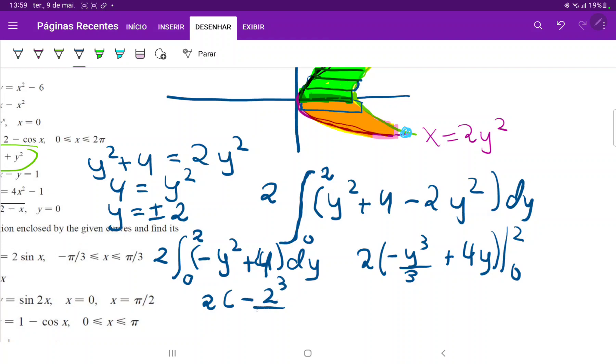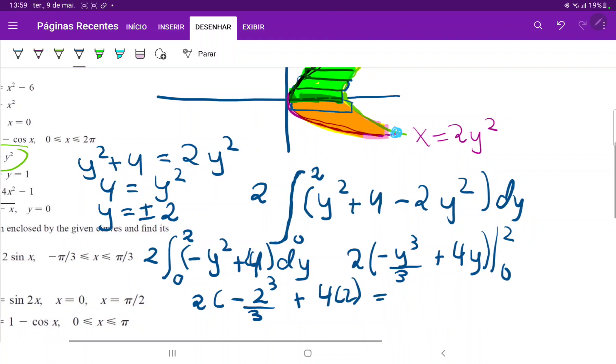So this is two times minus two cubed over three plus four times two. So this is equal to two times minus two cubed over three, that is minus eight times two, so minus 16 over three plus two times four times two, which is plus 16.